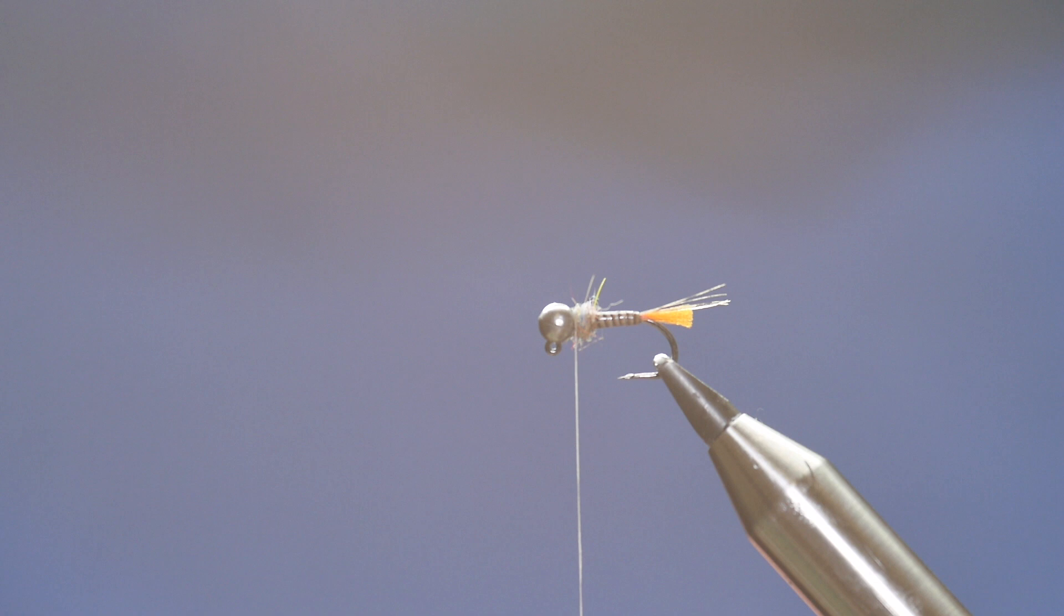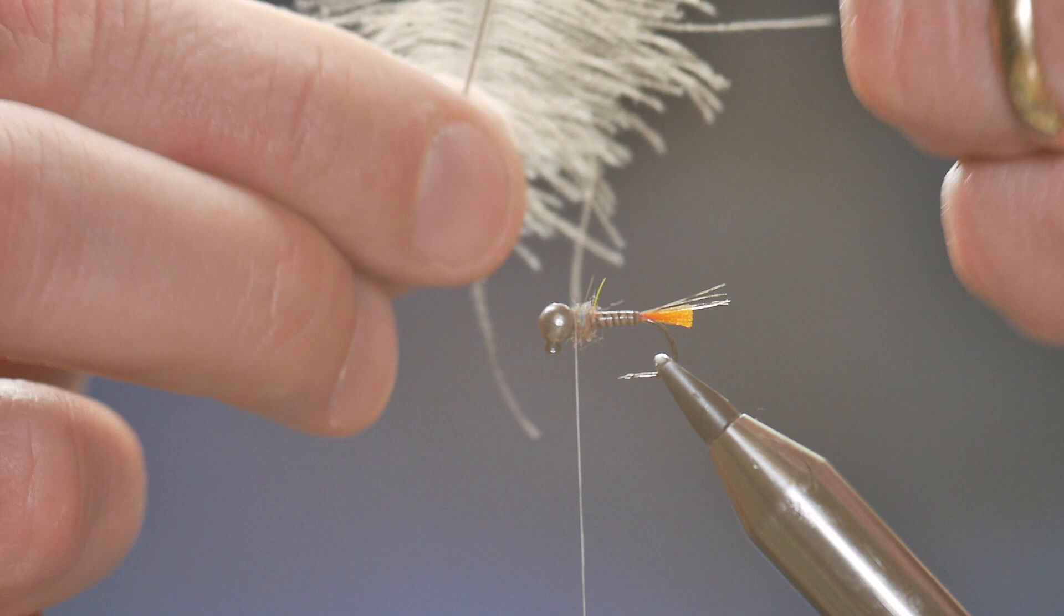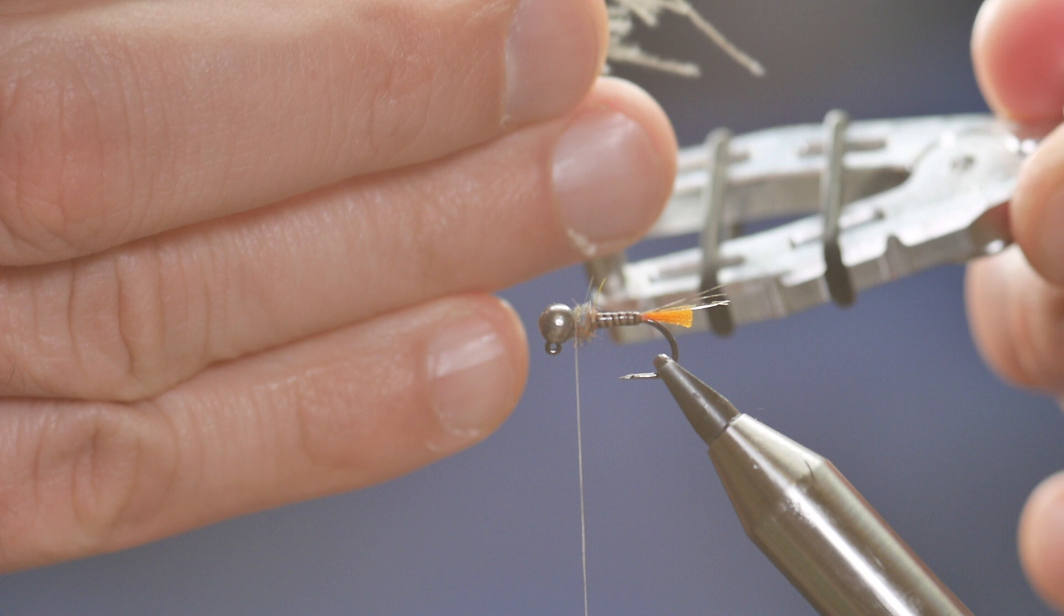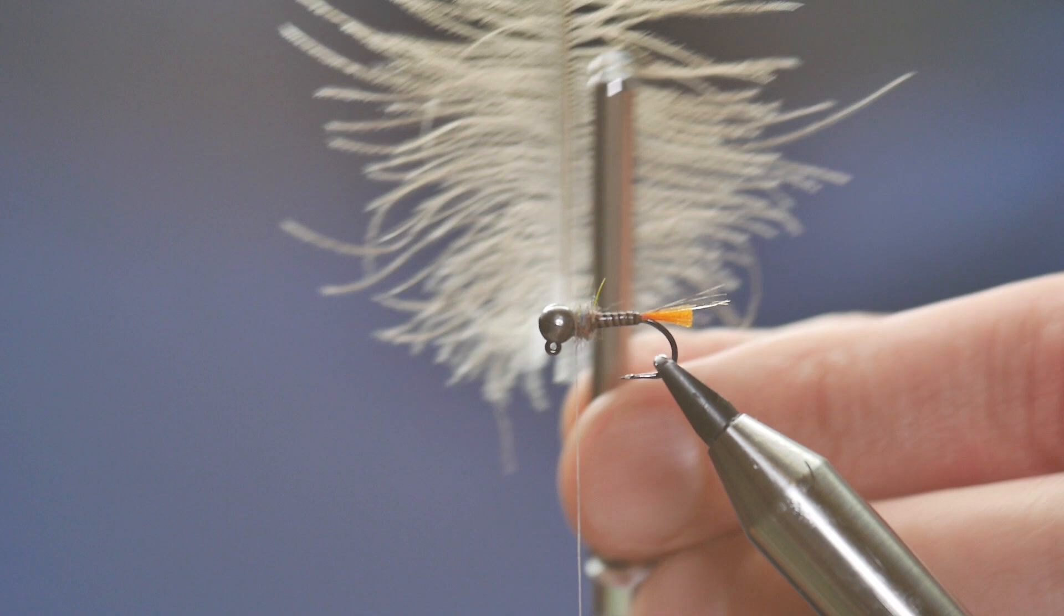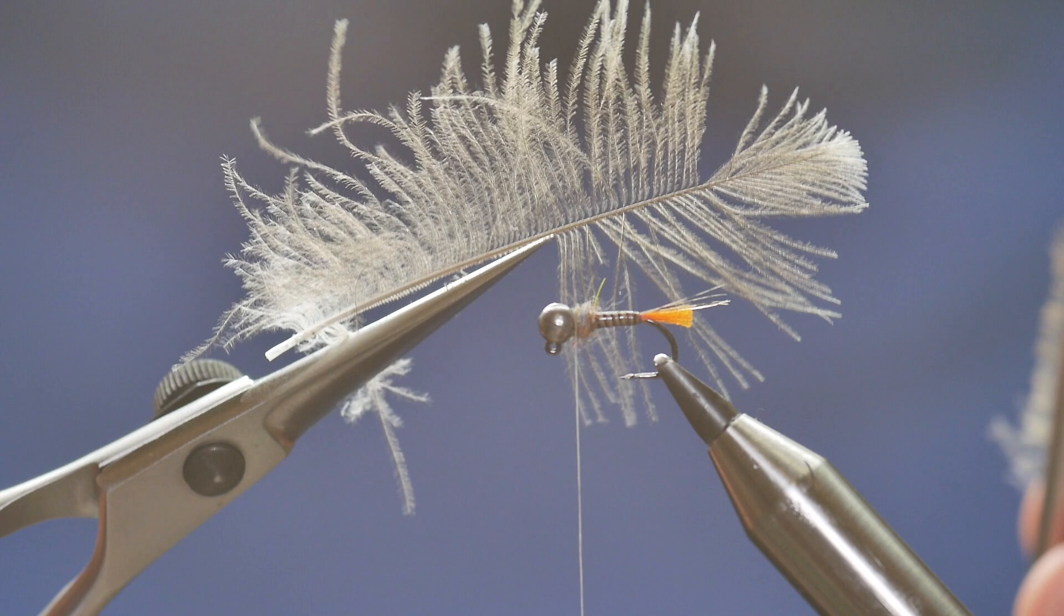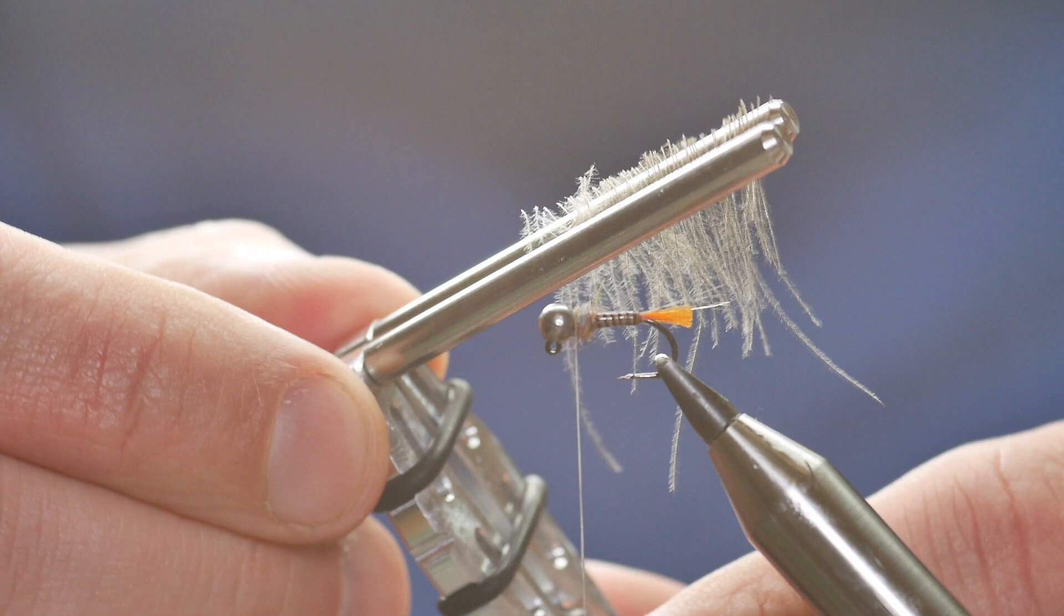But what there is, is a CDC collar. I'm going to use some of the Ultra Select CDC from Troutline. I've already taken a feather out of the packet. They're lovely huge feathers. I don't really need this kind of volume in my feather. So what I'm going to do is bring in my clip and I'm going to take maybe half the length of the feather. I'll keep this piece because I can probably get another three flies out of it.